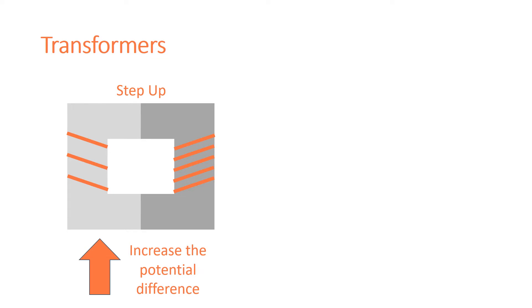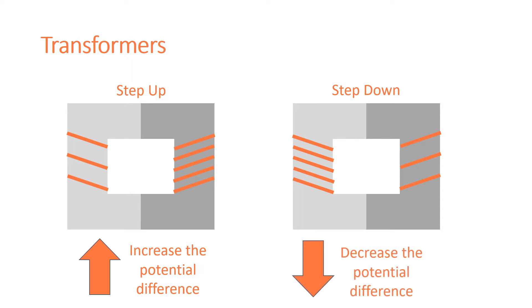Step-up transformers are used to increase the potential difference from the power station to the transmission cables, and then step-down transformers are used to decrease to a much lower value the potential difference for domestic use.